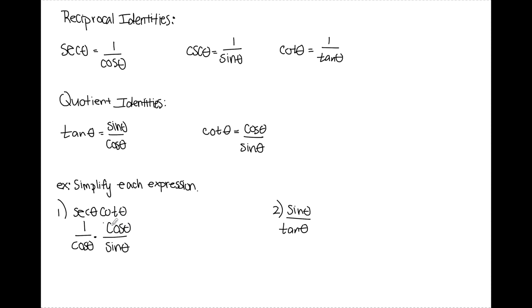From here I can see that my cosine theta's cancel, so I'm left with 1 over sine theta, which is equal to cosecant theta. That is as simple as that expression can get.